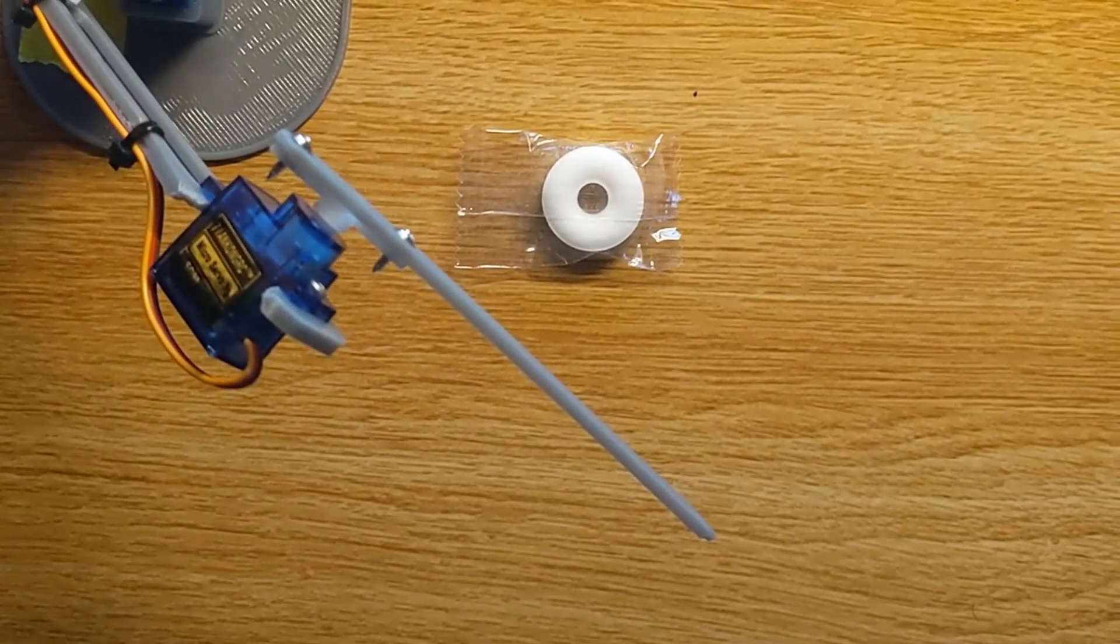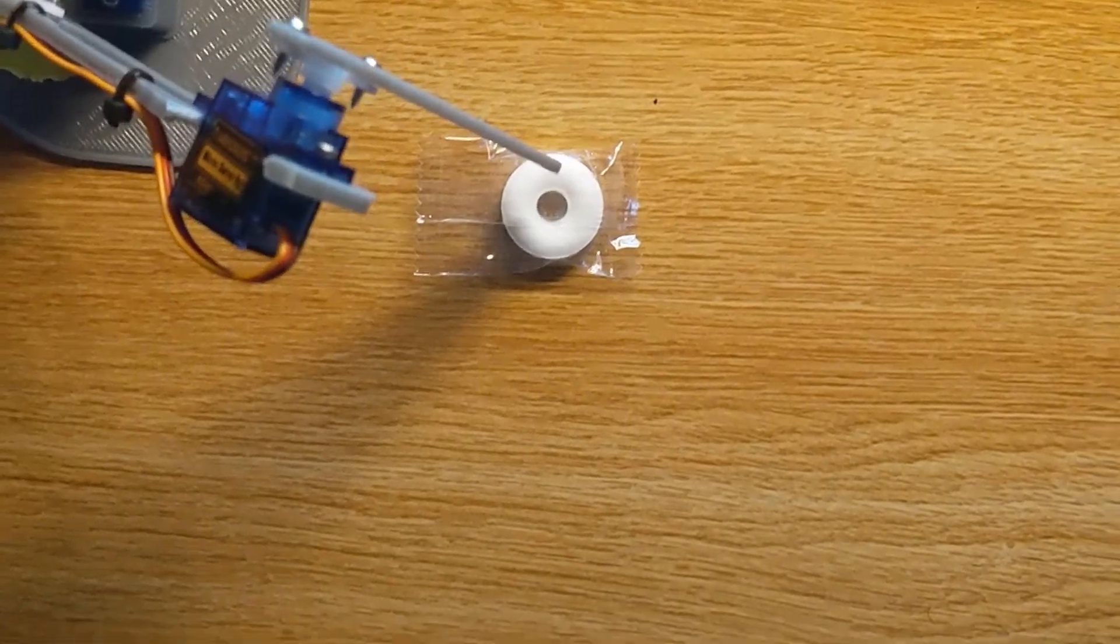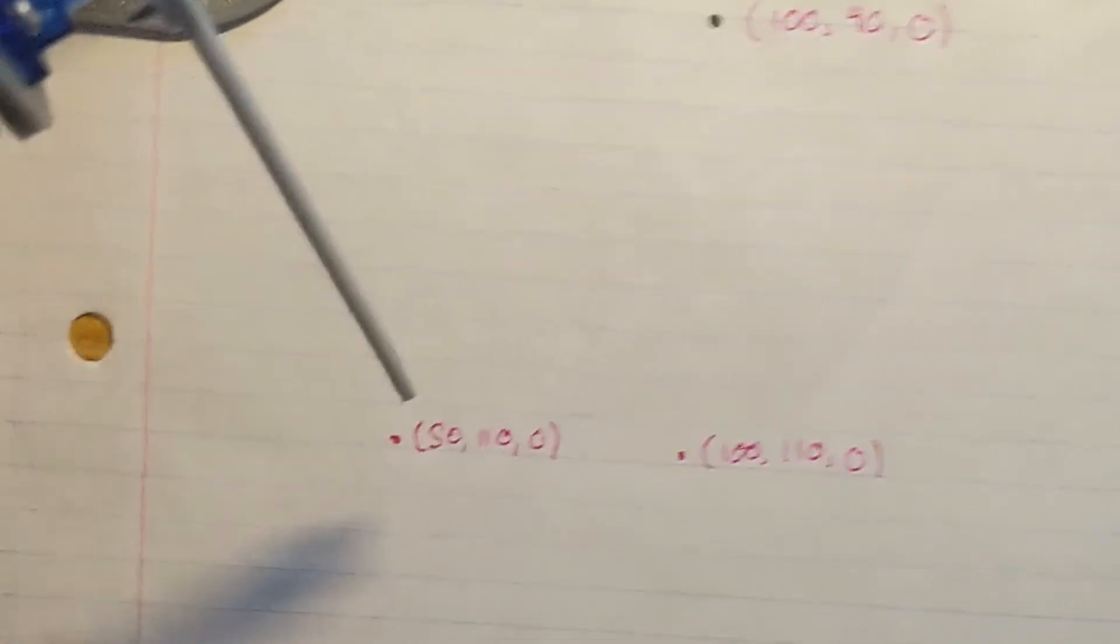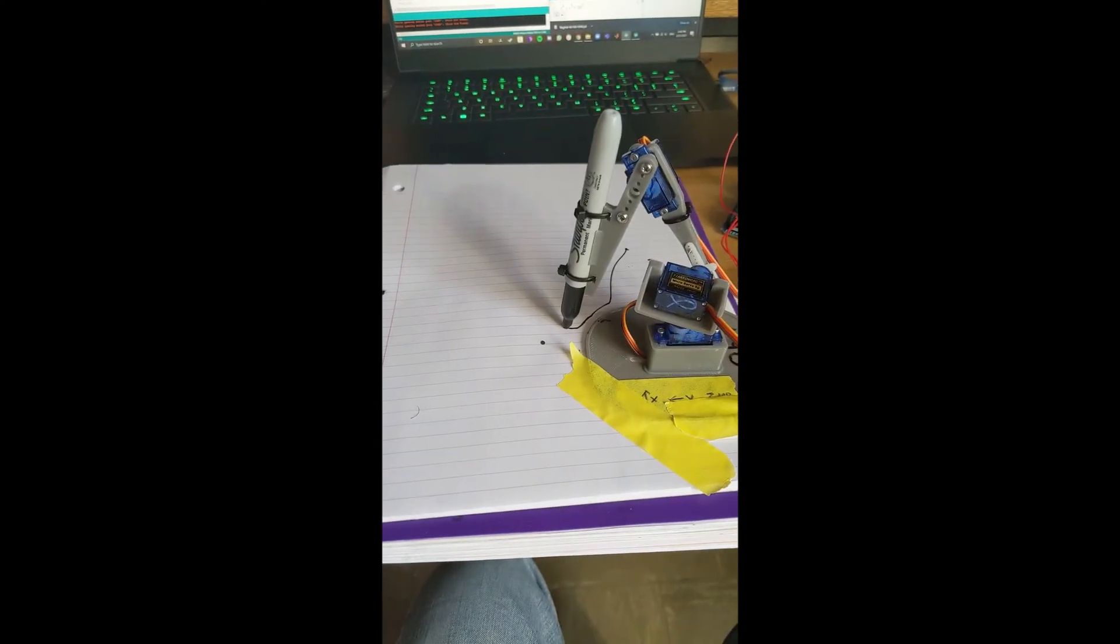All in all, this robot doesn't draw too well, but it achieves the initial goal pretty well. This baby is capable of positioning that Sharpie within just a few millimeters of the actual point, which is pretty impressive if you ask me.